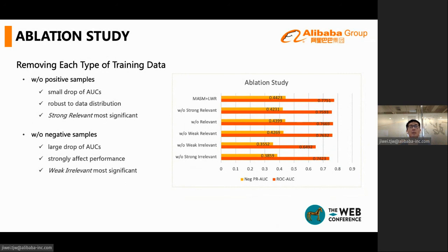When removing the negative samples, the results will be much worse. Even the random samples there will be 3 points AUC drop. Most important is the weak irrelevant. With this type of training data, the AUC scores will suffer from 10 points decrease. This type of negative samples is also what we want the relevant model to filter online. So it is indeed important to this task.